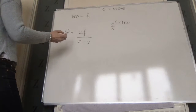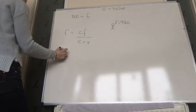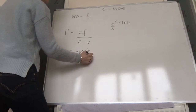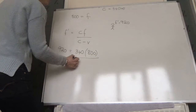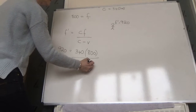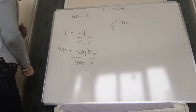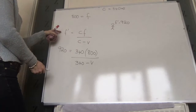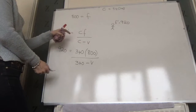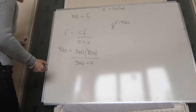So F-dash is 920, and we have 920 equals 340 times F (which is 800) over 340 minus V. We have one equation and one unknown, so we can solve it. It's up to you whether you rearrange the formula first to get V equals something, or rearrange with the numbers already in.